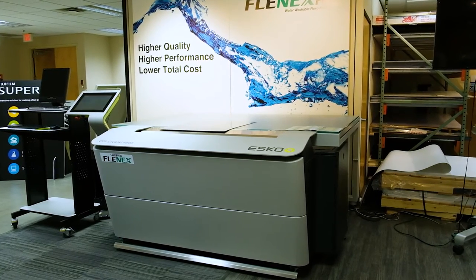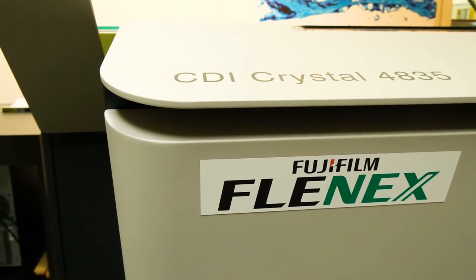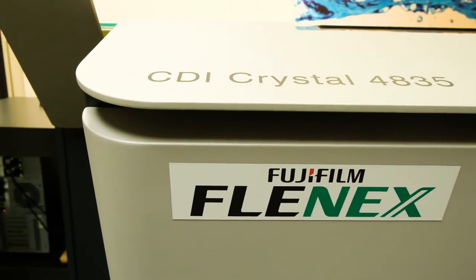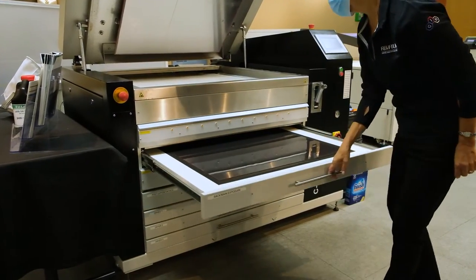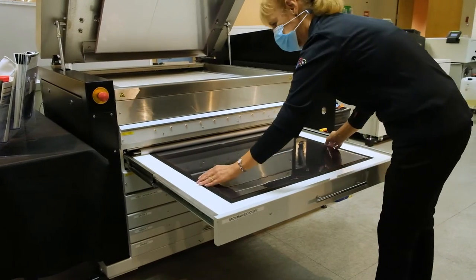This video is intended to show how a Fujifilm Flynex rubber-based water wash photopolymer plate is made using an Esco CDI Crystal 4835 and a C-Touch combination processor and exposure unit.